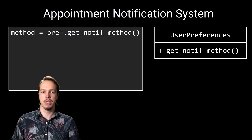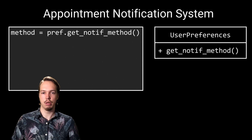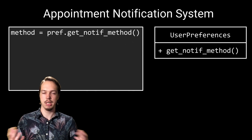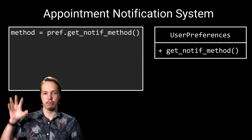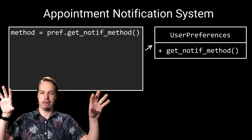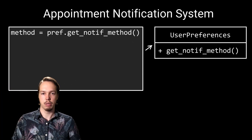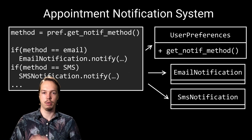We will focus on the logic used to choose the notification method. In our first solution, we start by retrieving the notification method from our user preferences component. This means that there's now a source code dependency from our business logic to the user preferences component. Then, based on the preferred method of notification, we send out a notification through text or email.